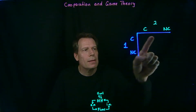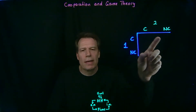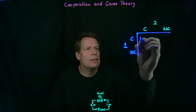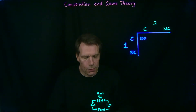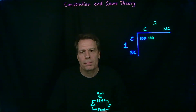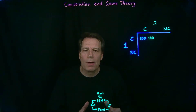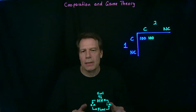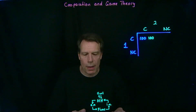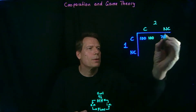Then we can fill in the matrix with what we call the payoffs to the players — how much surplus do they get under the different ways the game could be played? If they both cooperate, perhaps they'll get a surplus of 100 each. The first number is the surplus for Player 1 and the second for Player 2. What if Player 1 cooperates and Player 2 does not? Player 1 gets some of the benefits from cooperation — he is trading and specializing — but Player 2 doesn't get as many benefits. So perhaps Player 1 gets a payoff of 75 and Player 2 gets a payoff of only 50.